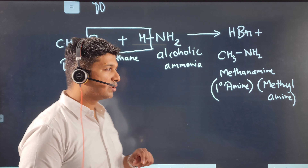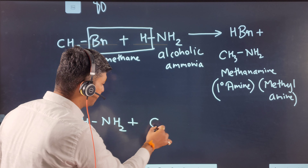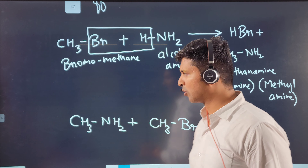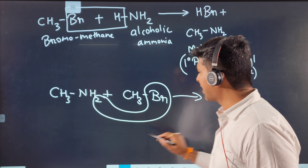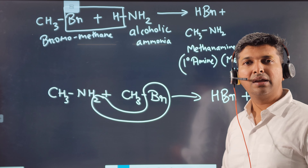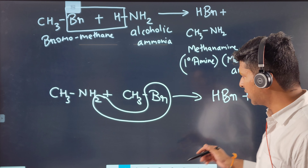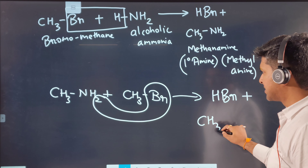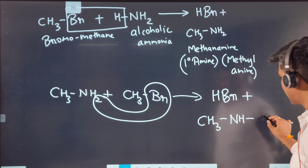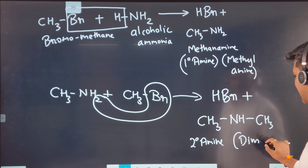The reaction does not stop there. In the second step, we take methanamine (CH₃NH₂) and react it further with the same haloalkane, bromomethane. One more H and Br combine to give HBr, and another CH₃ attaches to nitrogen. Now we have CH₃–NH–CH₃, a secondary amine. The common name is dimethylamine.